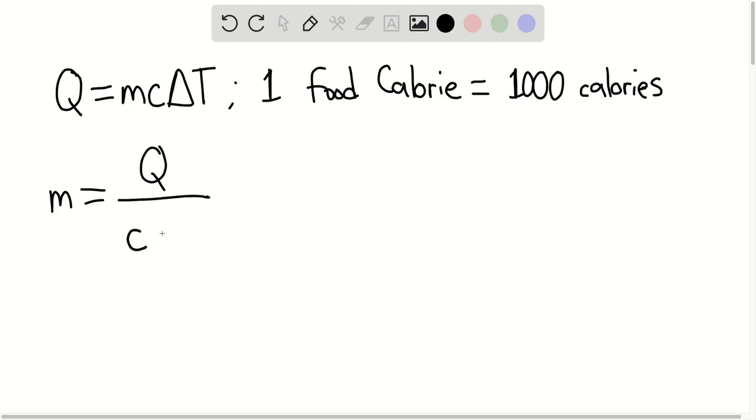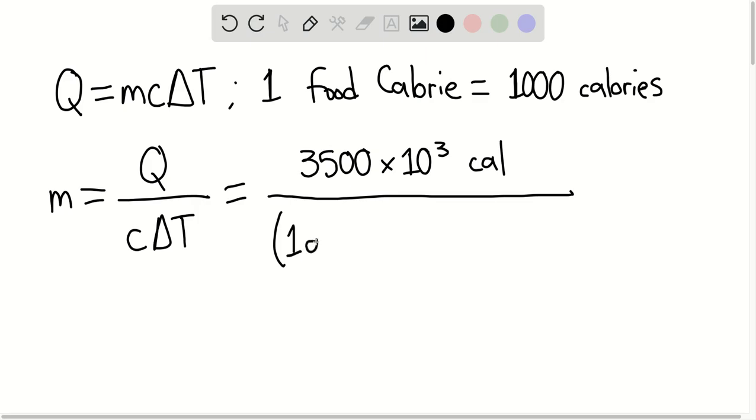This is giving us 3,500 food calories, so 3,500 times 10 to the third calories divided by 1 gram per calorie per degree Celsius.